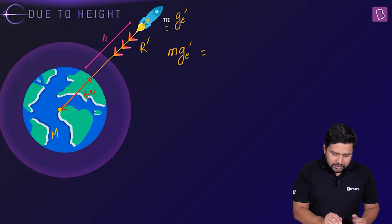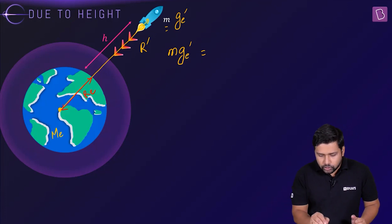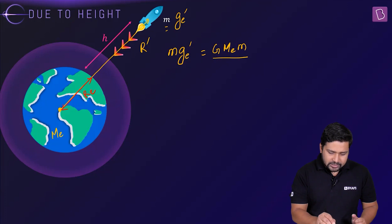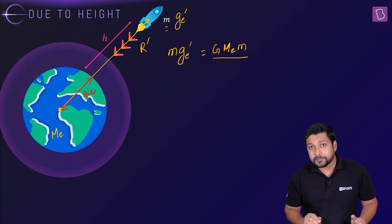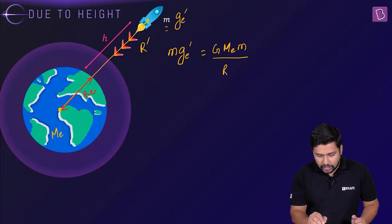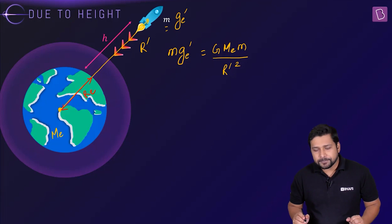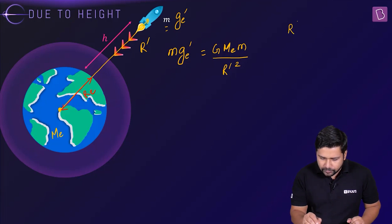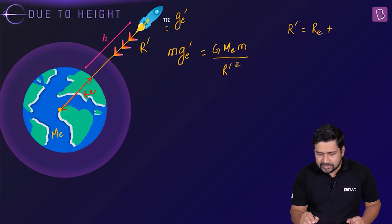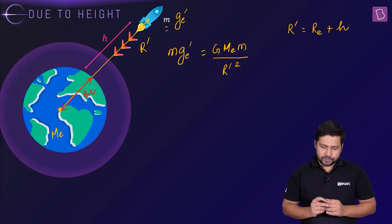This is the gravitational force, for which we use Newton's formula. Let the mass of the earth be M_e. So we have G times M_e times m divided by r_dash squared equals m times g_e_dash. The value of r_dash can be written as the radius of the earth plus the height: r_dash equals r_e plus h.